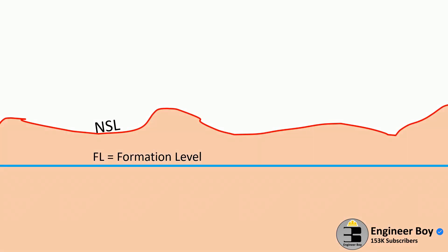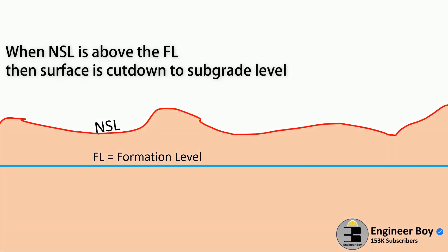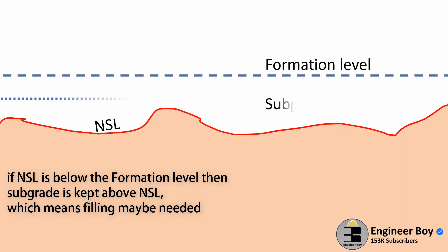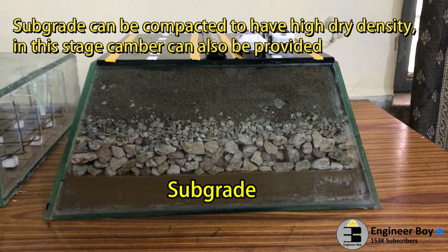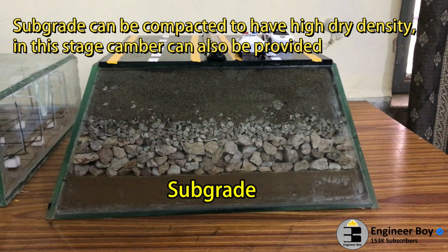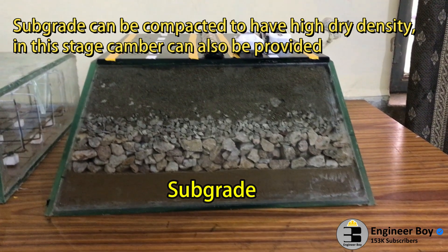If the natural surface level is above the formation level, then the surface is cut down to the proposed subgrade surface. If the natural surface level is below the formation level, then the subgrade is kept above the ground level. Subgrade is sometimes compacted with a roller, and a transverse slope is also provided to drain off surface water.